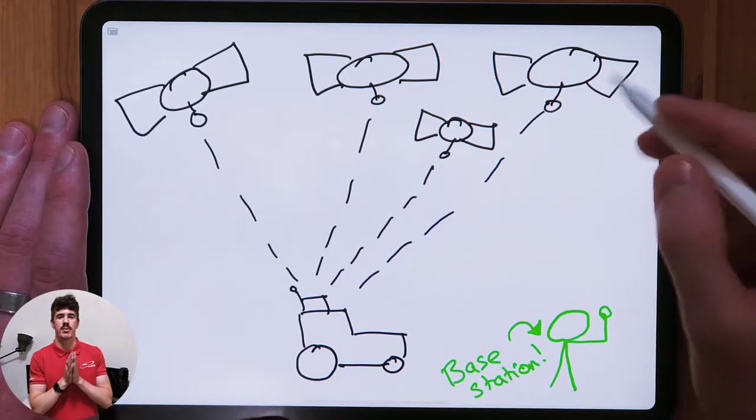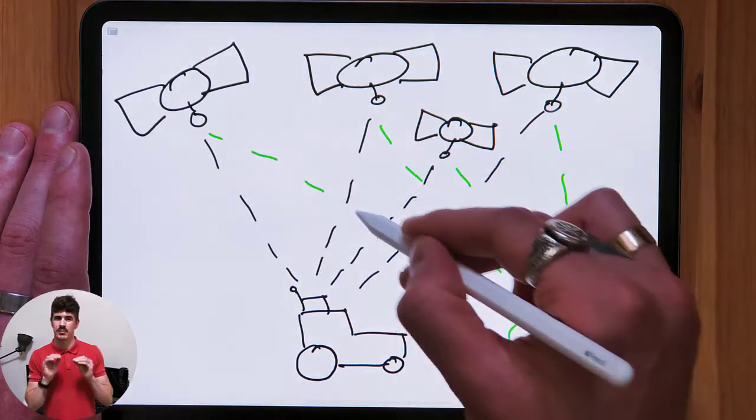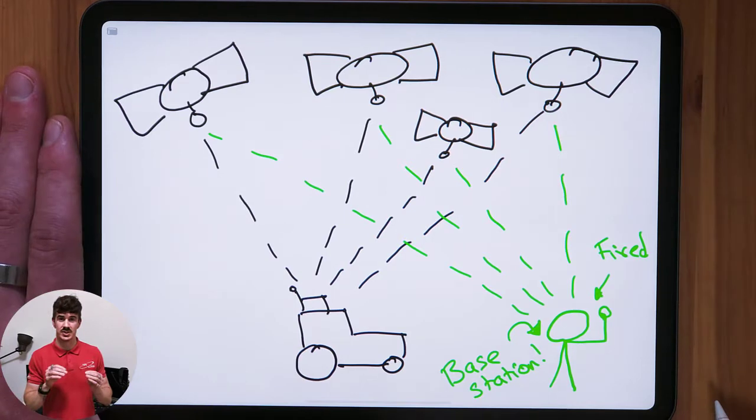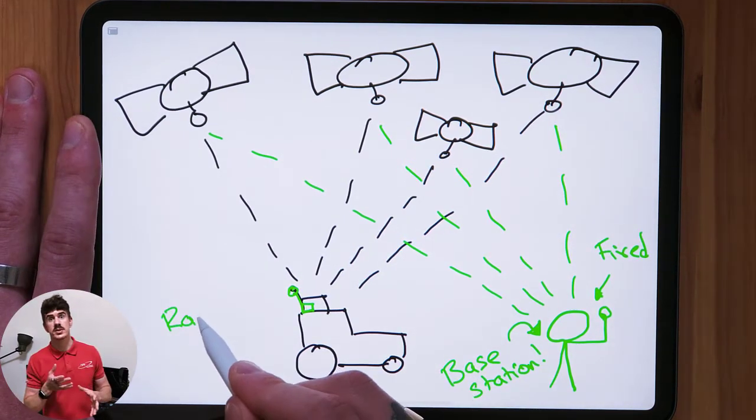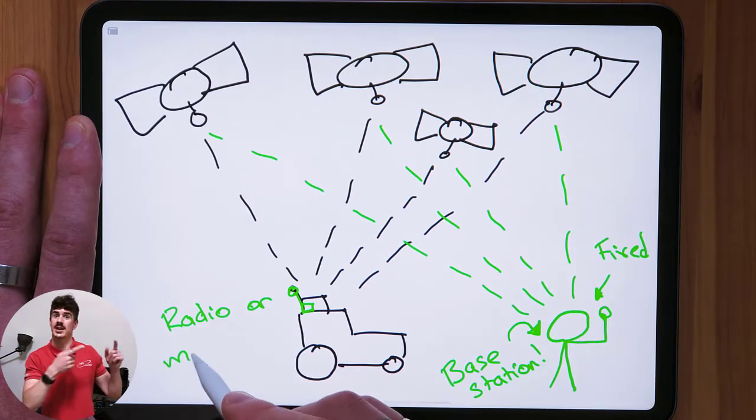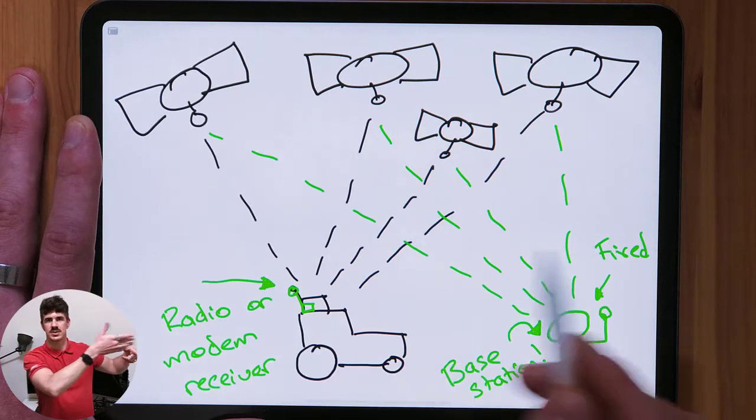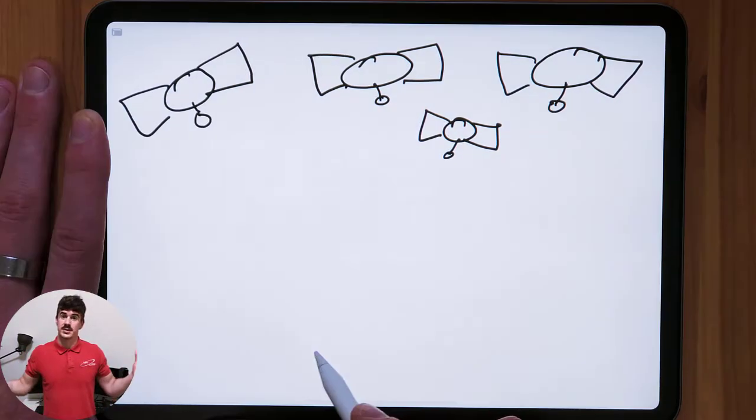The way it works is based much on the same theory as satellite-based. However, the processing is done a little closer to home. Ground-based error correction requires what we call a base station, which is the correction source, and also a radio or modem, which is the correction receiver on the rover side or the moving target, which is your harvester or your tractor or your farming equipment.